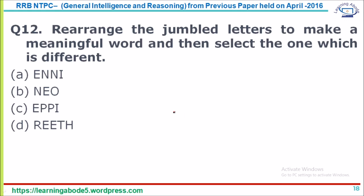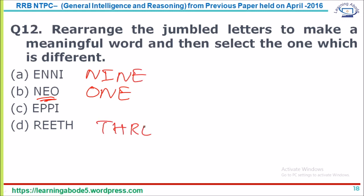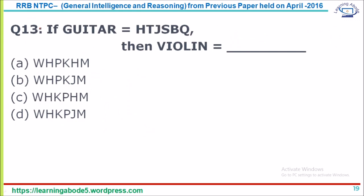Question 12: Rearrange the jumbled letters to make a meaningful word and select the one that is different. NEO rearranges to ONE; another gives NINE; another gives THREE. Option C rearranges to PIPE — which is not a number. Options A, B, D are all numbers expressed as words, while option C is not a number. Answer option C is the odd one out.